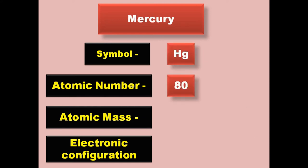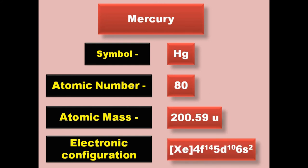Mercury has symbol Hg, atomic number 80, atomic mass 200.59, electronic configuration [Xe] 4f14 5d10 6s2. Mercury is a transition metal and exists in liquid form at room temperature.